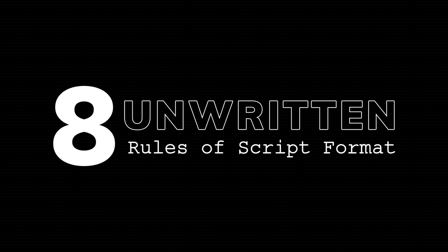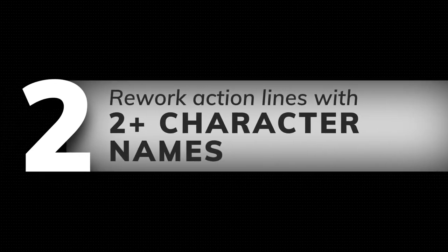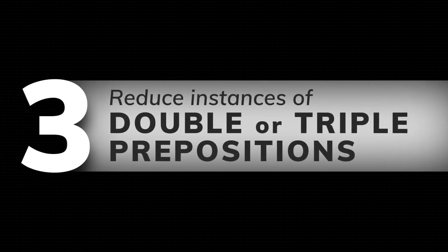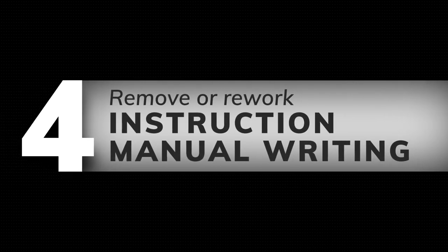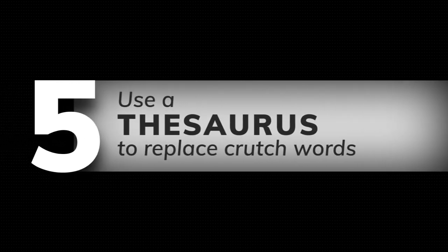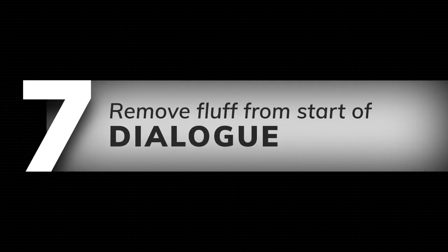Let's review the eight unwritten rules of script format. One: keep your action lines to four lines max. Two: remove or rework any action lines with two or more character names. Three: reduce instances of double or triple prepositions. Four: remove or rework any clerical or instruction manual writing. Five: use a thesaurus to replace crutch words. Six: remove any instance of 'he starts to' or 'he begins to.' Seven: remove fluff from the start of any dialogue. Eight: use the three-line rule to fix the dialogue in your script.